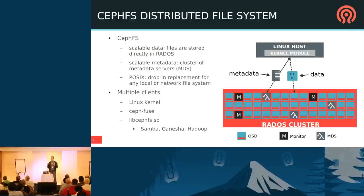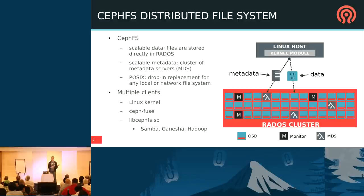CephFS stores all its files as objects in RADOS that clients access directly, giving very scalable, high-performance data access. It scales just as RADOS does. It also has scalable metadata access — files, directories, and permissions are distributed across a set of metadata servers dynamically managing the namespace. There are multiple clients: one in the Linux kernel, a user-space implementation via FUSE called CephFUSE, and libcephfs.so, which can be linked into Samba for CIFS, Ganesha for NFS, and Hadoop for big data analytics.